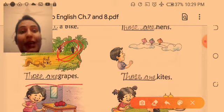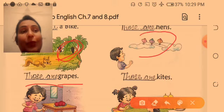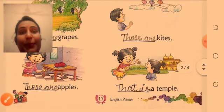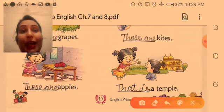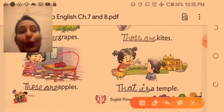Kites, more than one, so those are kites. Apples, watch, apples, more than one, those are apples.